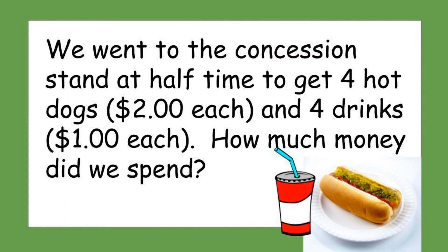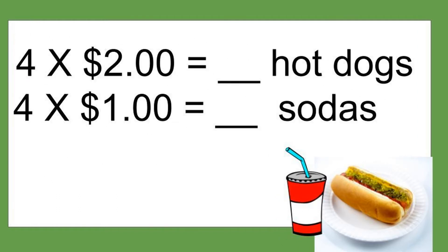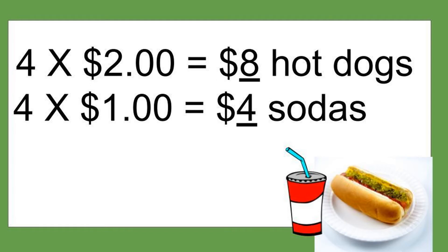Now that it's halftime, I'm really hungry! This next problem has to do with the concession stand. We got four hot dogs for $2 each and four drinks for $1 each. How much money did we spend? You may have noticed this is more than one step — it's really a three-step problem. Pause the video, solve it the way you think it should be solved, and then press play to check your answer. I need to figure out how much was spent on hot dogs and sodas. There are four people buying hot dogs for $2 each, so I'm going to multiply 4 times 2, and four people buying $1 sodas, so 4 times 1. Pause the video and solve that part.